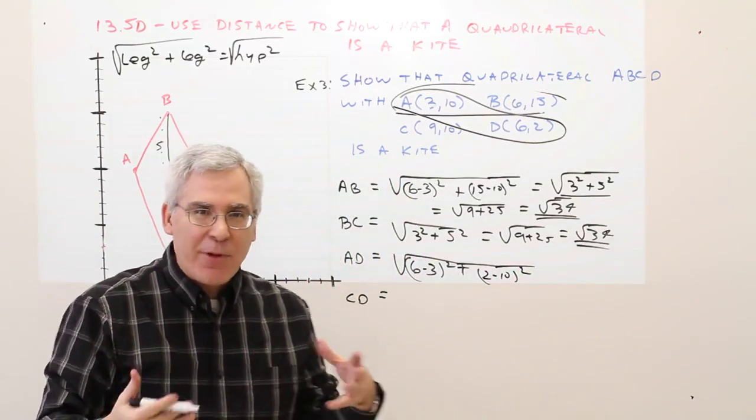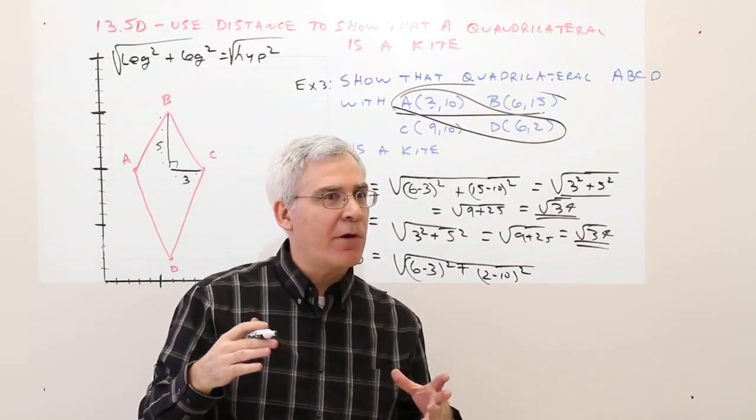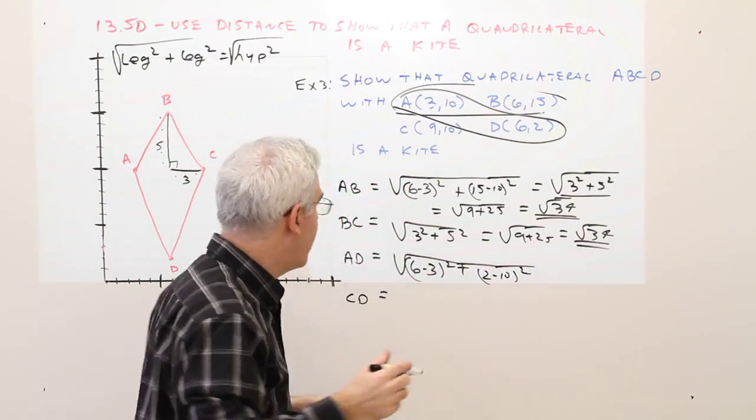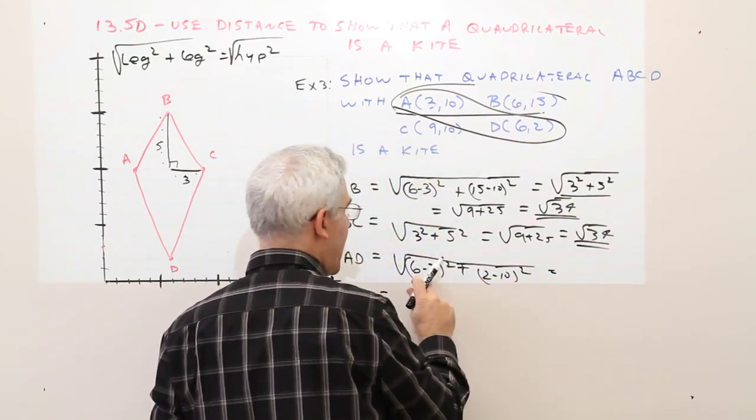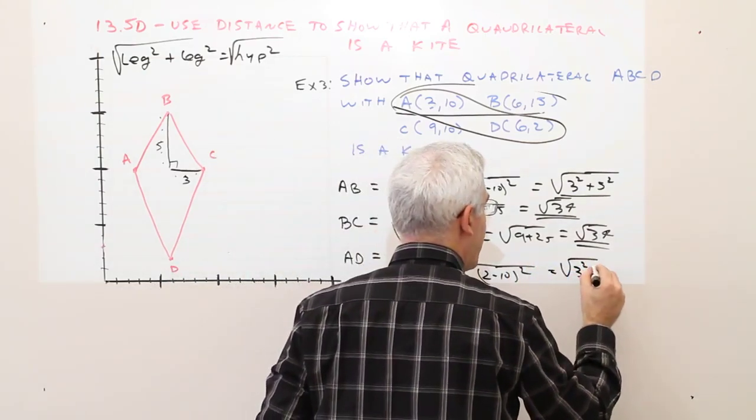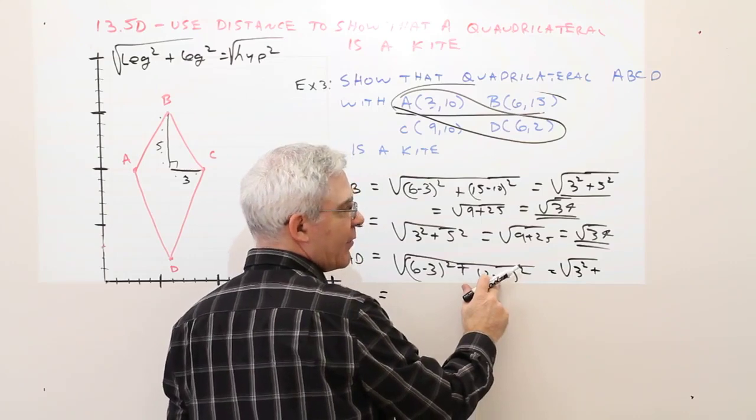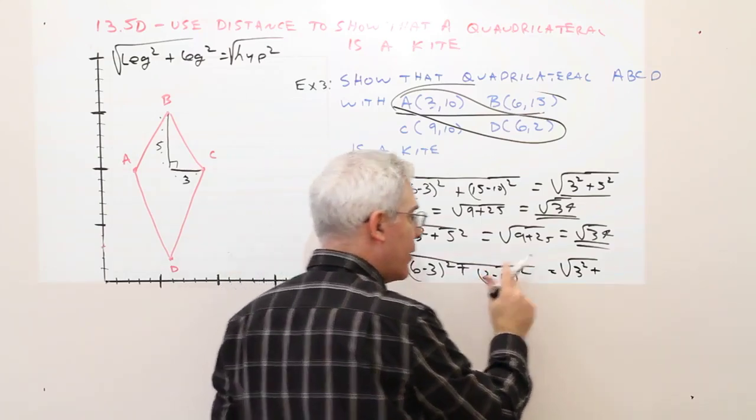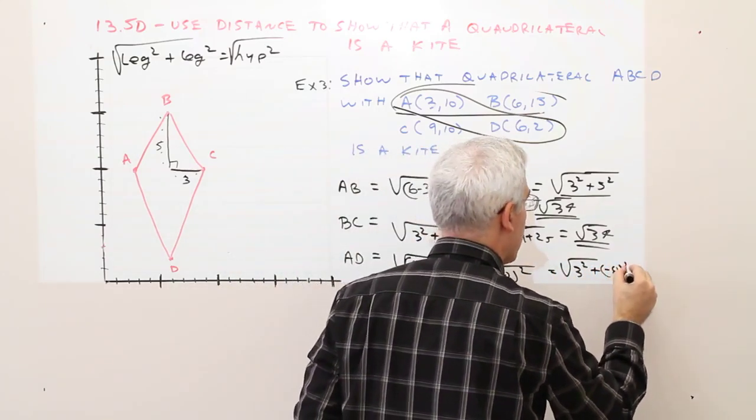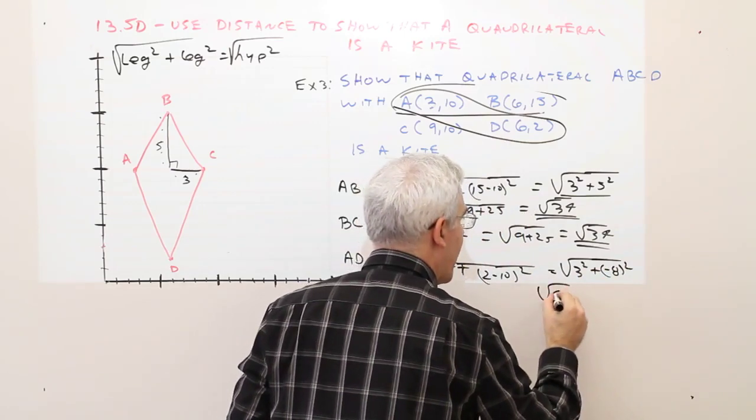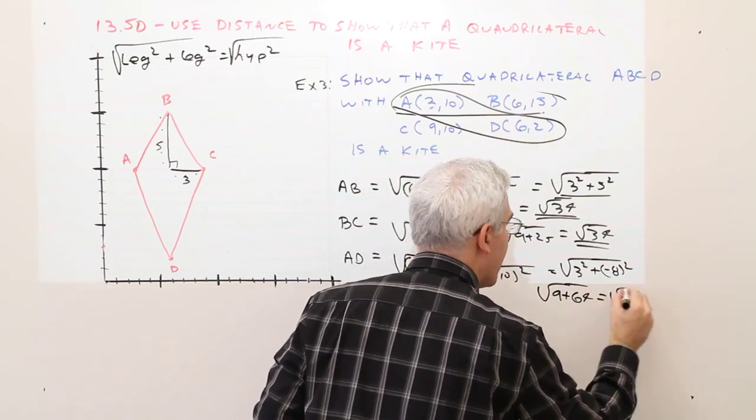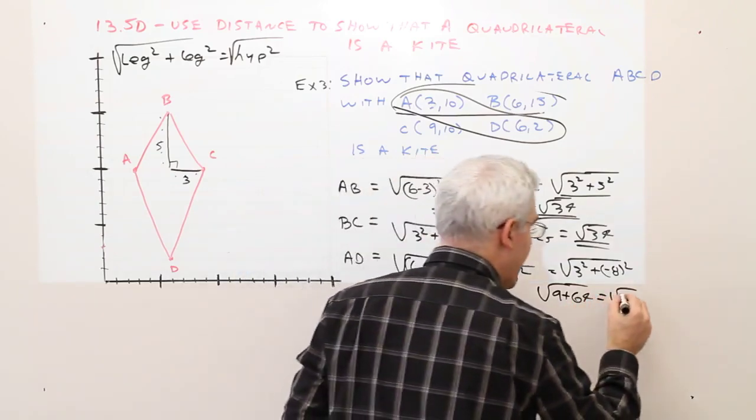So it would be 6 minus 3 squared plus 2 minus 10 squared. I don't really care about the sign because I know if I square a number, it's going to be either 0 or positive. So that's the square root of 3 squared plus negative 8 squared. That's the square root of 9 plus 64, which is the square root of 73.